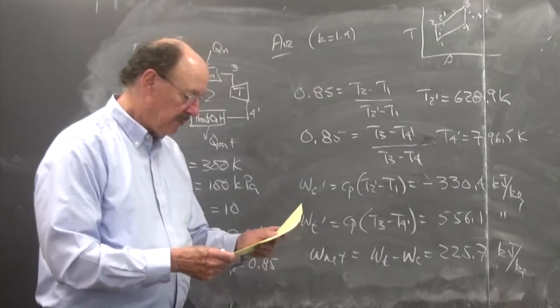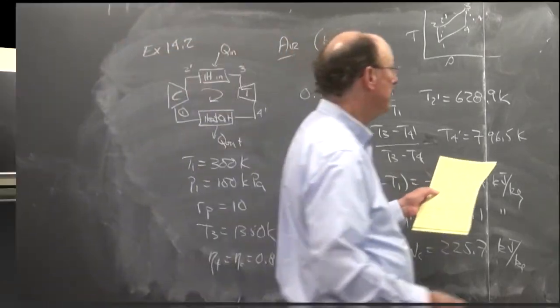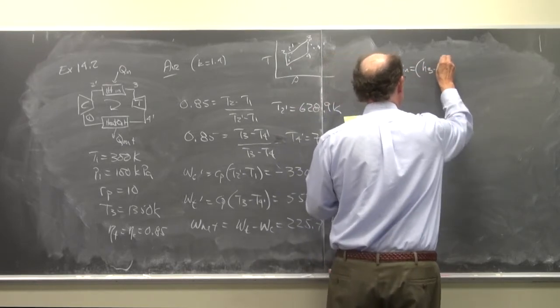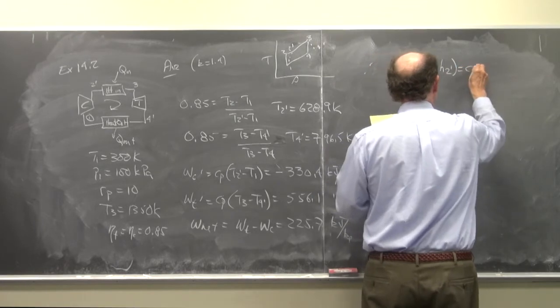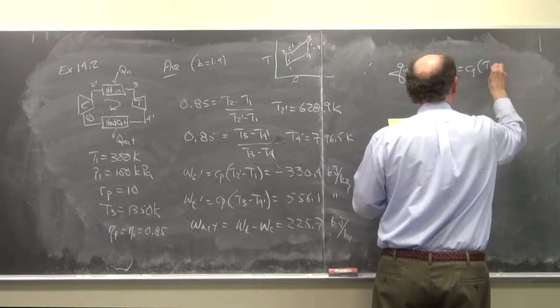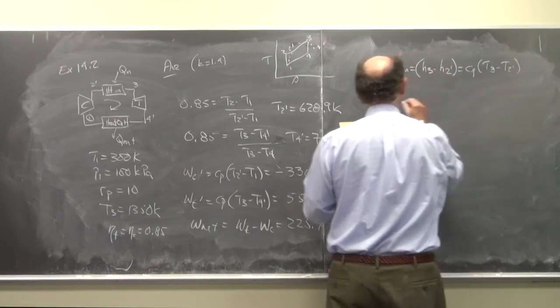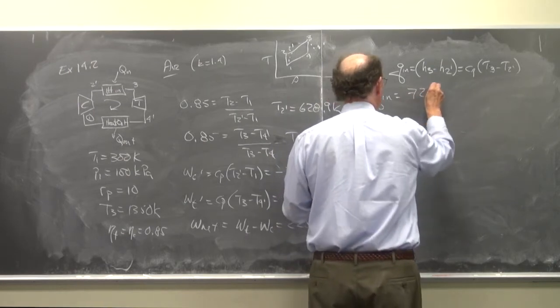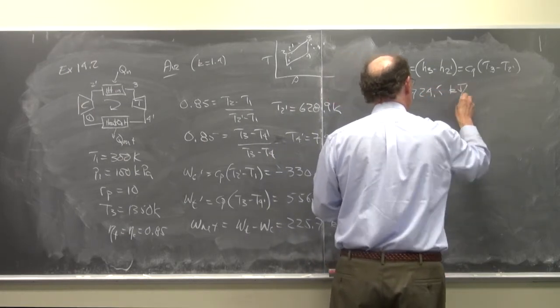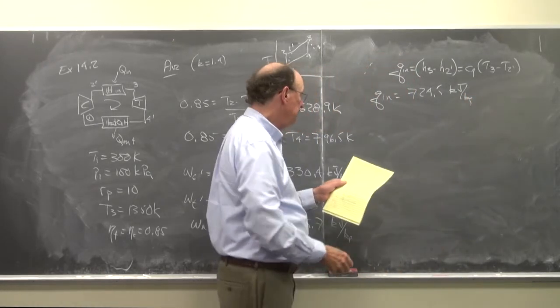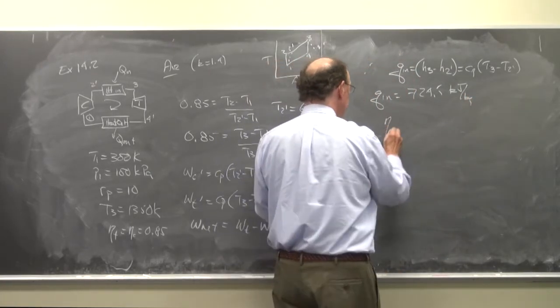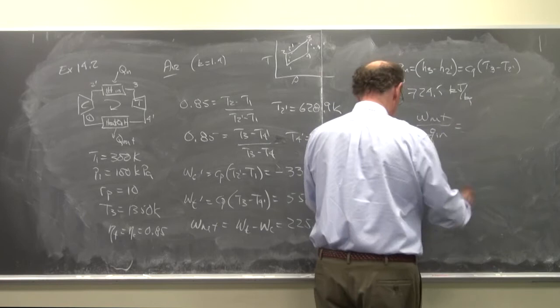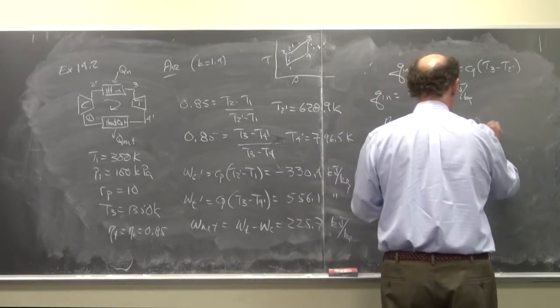So we can look at that and then the heat in is h3 minus h2 prime, is equal to c sub p times T3 minus T2 prime. So q in is equal to 724.5 kJ per kg. And the thermal efficiency is w net over q in, is equal to 0.311.